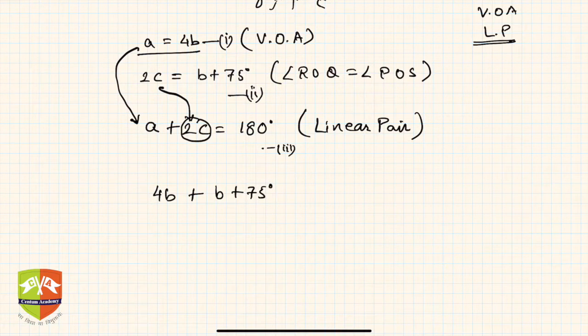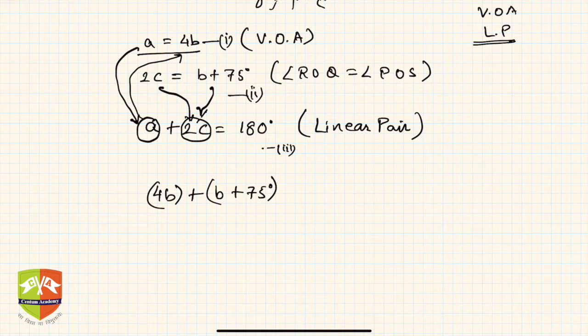So this 2c I am replacing by this part and this a I am replacing with this part. So 4b plus b plus 75, this was 2c and this was a, is equal to 180 degrees. Instead of this a I am writing 4b because a equals 4b, and instead of 2c I can write b plus 75.